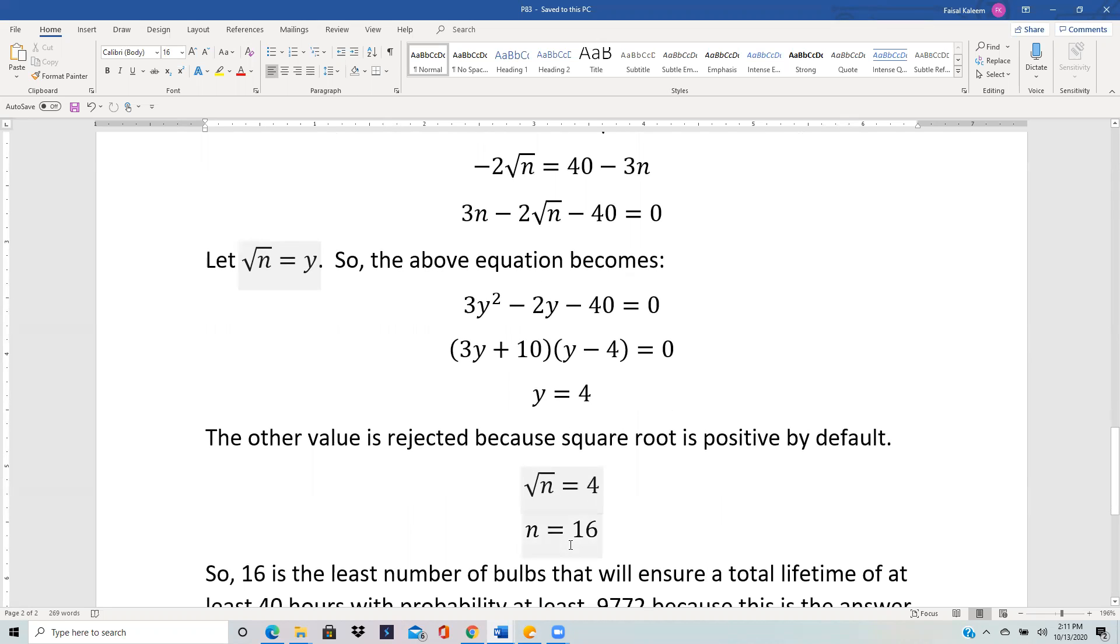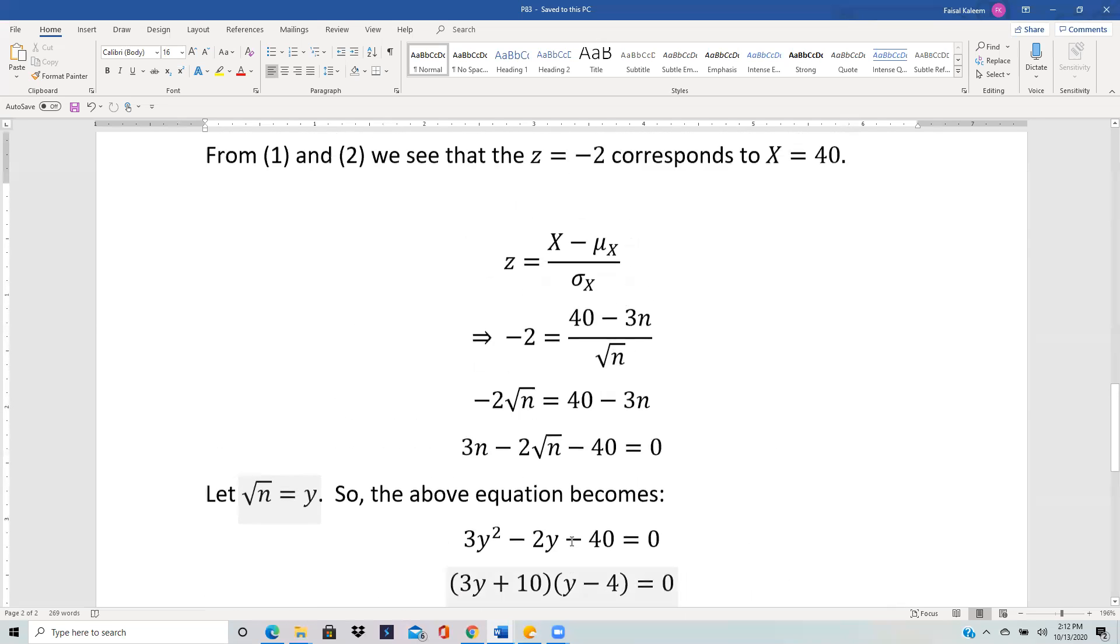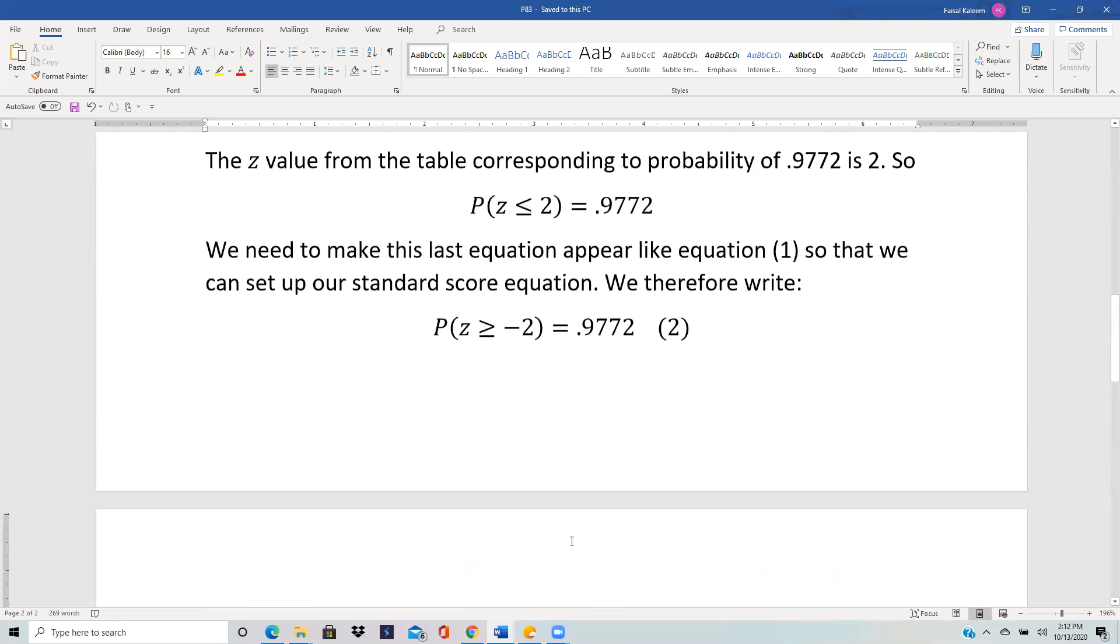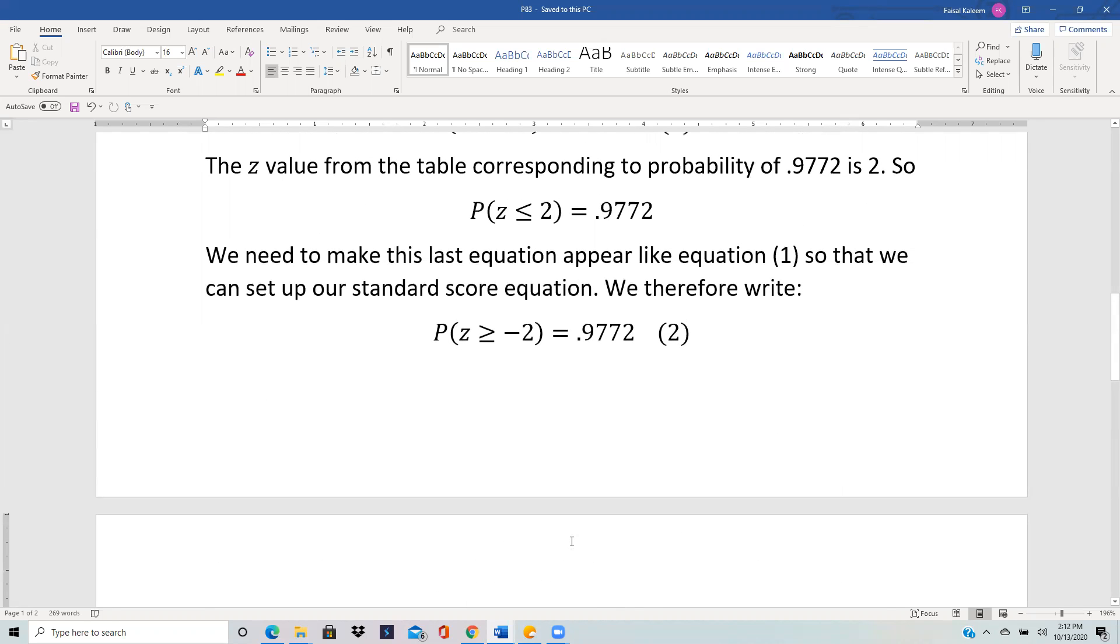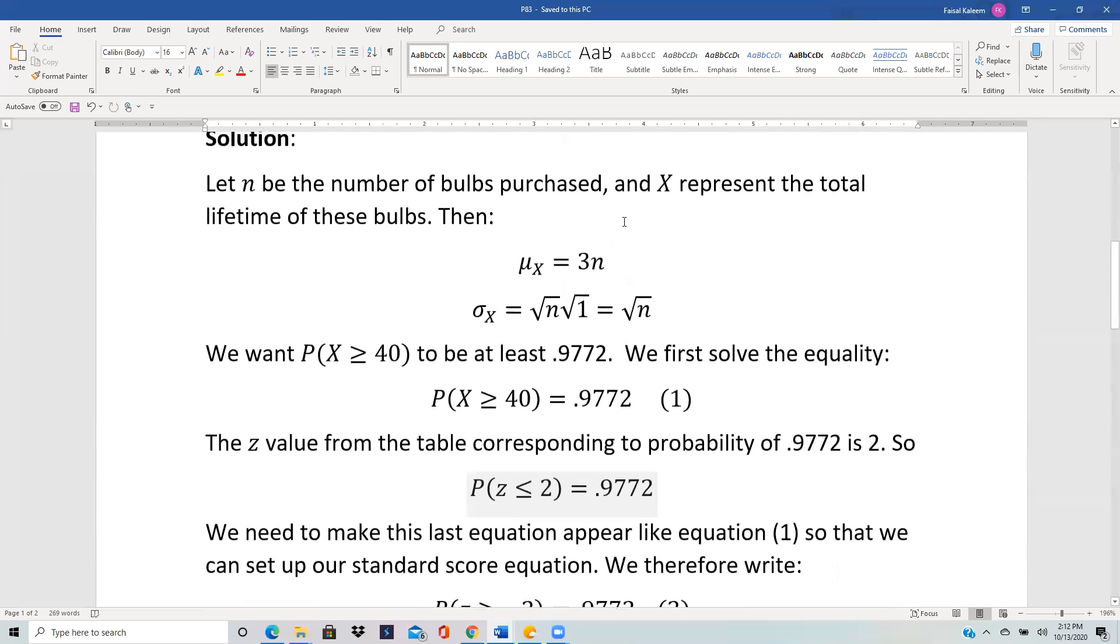Remember n was the number of bulbs we purchased. If you purchase 16 bulbs, you get the probability of the lifetime being greater than or equal to 40 to be exactly 0.9772. We were asked how many bulbs do you need minimum so that the probability is at least 0.9772. If you want a greater probability than 0.9772, then you will need more than 16 bulbs.